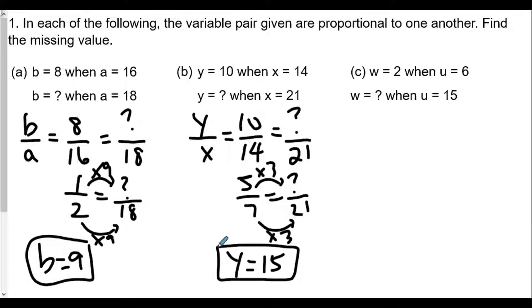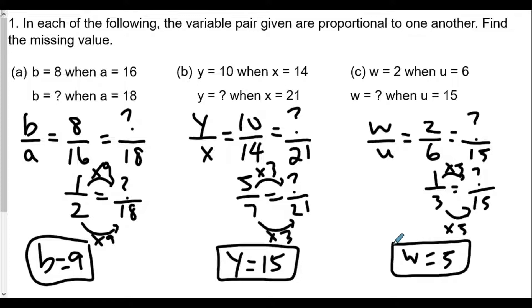For letter c, when w equals 2 when u equals 6. Well w over u equals 2 over 6. In this case unknown value over 15. Again we're going to simplify the 2 over 6 to 1 over 3. And we know in this case 3 times 5 is 15. Therefore 1 times 5, the unknown w value, w is equal to 5. And so that's the answer for number 1. The setup's pretty much the same way. Be very careful when you set this up.